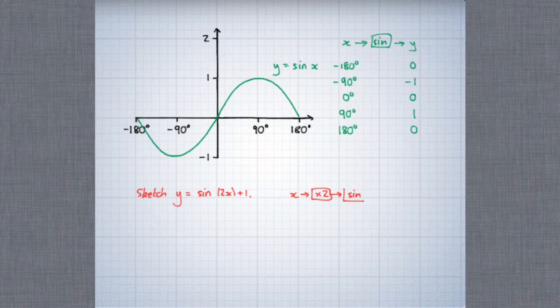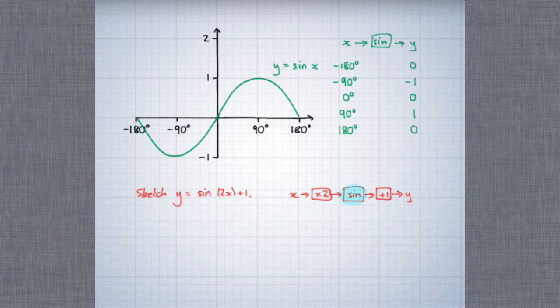Then we put that into the sine function. Finally, we add 1 in order to get the y-coordinate. Just as before, the key thing to understand is that the original graph is illustrating this part of the function diagram. On the original graph, the x-coordinates were the input to the sine function, and the y-coordinates were the output from the sine function.